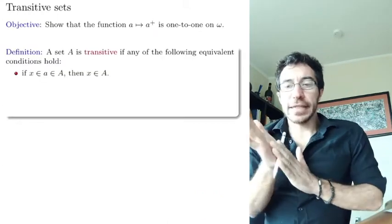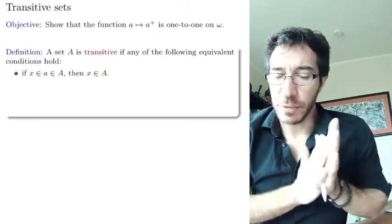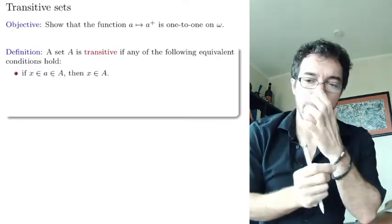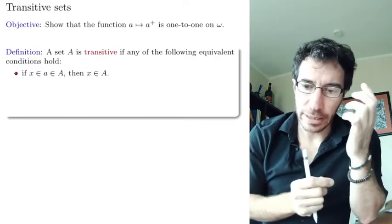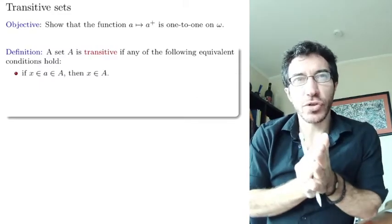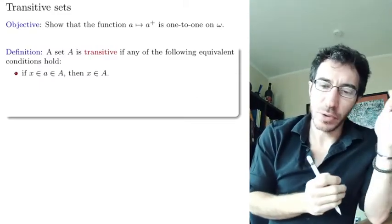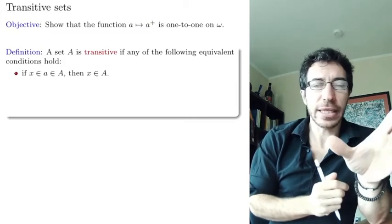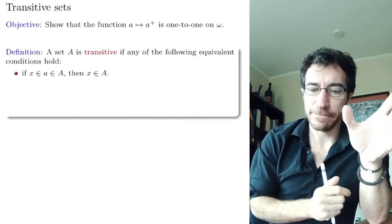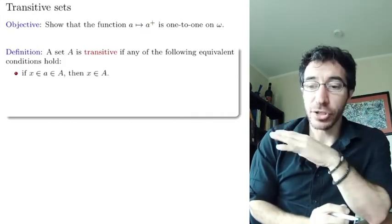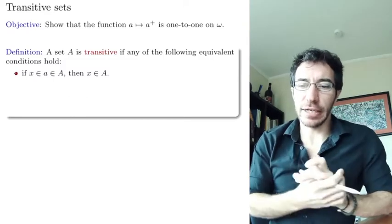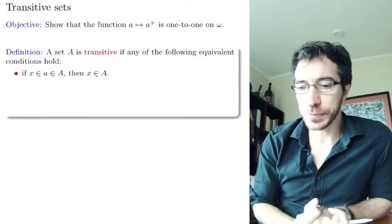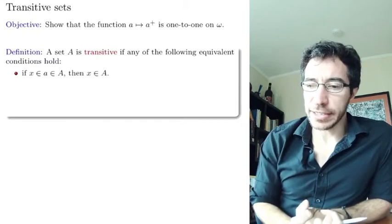To prove that the successor function is one-to-one on the natural numbers, we are going to introduce the notion of transitive sets. This notion is not only for this proof — it's going to be very useful when we do ordinals. It's a bit technical, but bear with me because it's going to help us a lot later in the class.